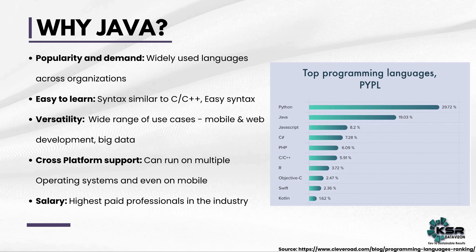The key difference from other languages is that in Java, if you compile code on a Mac, you can run it on Windows without compiling it again. But for C or C++, if you compile it on Mac, you cannot run it on Windows — you will have to compile again. This is what makes Java beautiful: you can create your Java application anywhere and run it anywhere. Next is salary — Java developers are highly paid professionals in the industry.